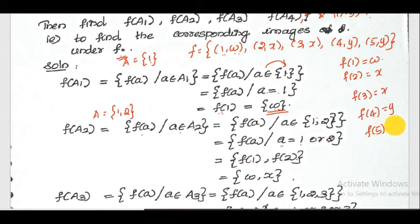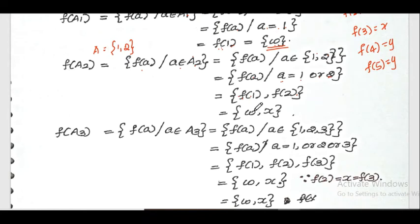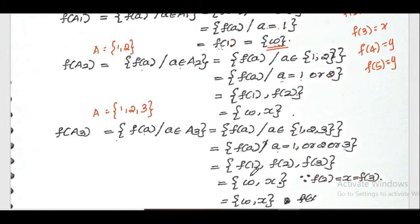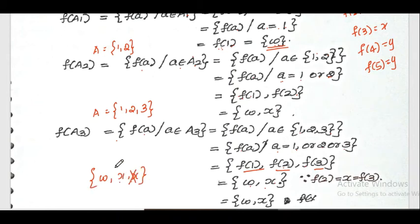For f(A3): A3 = {1, 2, 3}, so a takes the value 1, 2, or 3. Substituting, f(A3) = {f(1), f(2), f(3)}. Now f(1) = w, f(2) = x, and f(3) = x. Since f(2) and f(3) are both x, we avoid repetition. Therefore f(A3) = {w, x}. We can note that f(A3) = f(A2) because f(2) = f(3) = x.